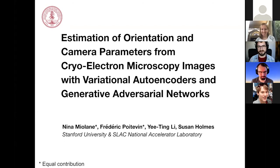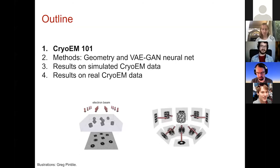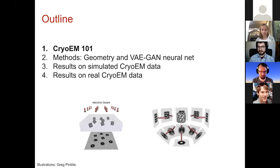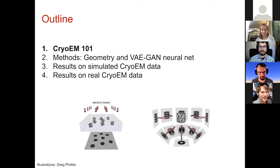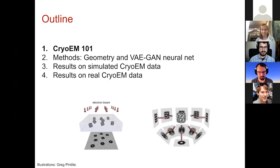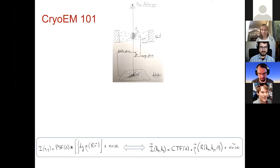We'll start with some very brief background on what we mean by cryo-electron microscopy. We're not going to talk about all kinds of electron microscopy — it will be very specific to one that basically targets the goal of reconstructing biomolecule volumes from 2D images. There is an interesting geometry behind this imaging process, and that's where the VAE and GAN approach comes in. We'll show how it worked on simulated data and then real data collected at Slack.